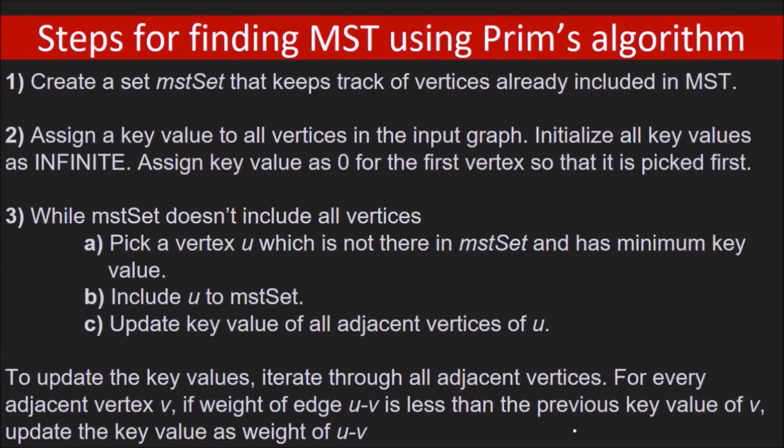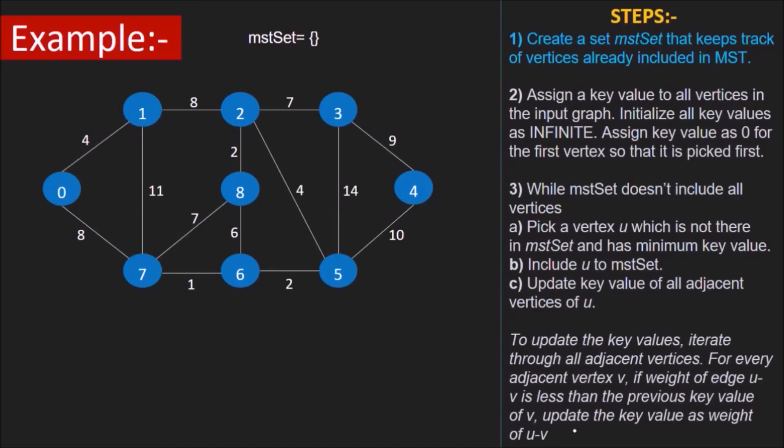Steps for finding minimum spanning tree using Prim's Algorithm. Well, it would be better if we try and understand each step one by one with the help of an example. So let's do that. Consider the given graph which has 9 vertices, V0 to V8. The numbers on the edges represent the weight of that edge. We need to obtain a minimum spanning tree of the given graph.